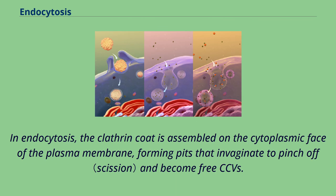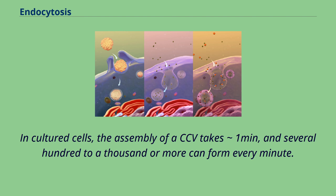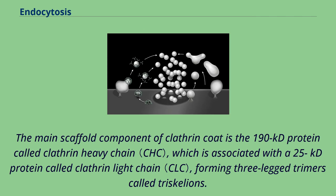In endocytosis, the clathrin coat is assembled on the cytoplasmic face of the plasma membrane, forming pits that invaginate to pinch off and become free clathrin-coated vesicles (CCVs). In cultured cells, the assembly of a CCV takes one minute, and several hundred to a thousand or more can form every minute. The main scaffold component of the clathrin coat is the 190 kDa protein called clathrin heavy chain, which is associated with a 25 kDa protein called clathrin light chain, forming three-legged trimers called triskelions.